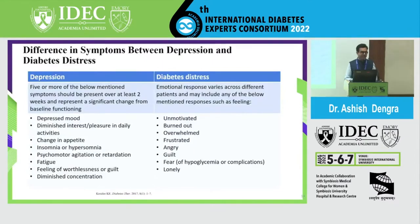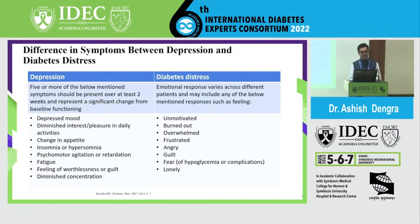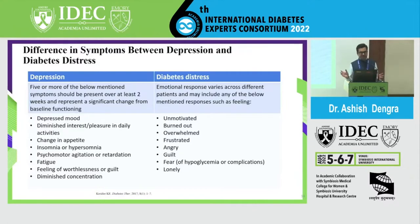For depression, 5 or more of the following symptoms must be present: depressed mood, diminished interest in activities, change in appetite, change in sleep pattern, psychomotor agitation or retardation, and fatigue. In contrast, with diabetes distress the patient feels unmotivated, burnt out, overwhelmed, frustrated, angry, guilty, has fear of hypoglycemia or complications, and feels lonely. These are the basic differentiating features between DD and MDD.